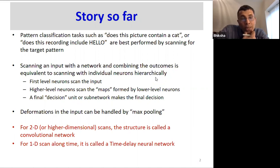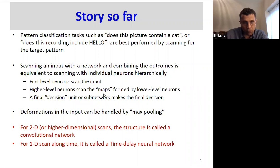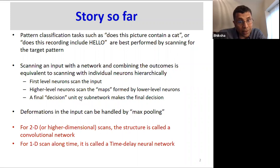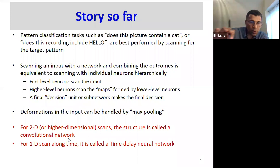Here's the story so far. Pattern classification tasks — such as 'does this picture contain a cat?' or 'does this recording contain the word hello?' — are best performed by scanning for the target pattern. Scanning an input with a network and combining outcomes is equivalent to scanning with individual neurons hierarchically: first-level neurons scan the input, higher-level neurons scan maps formed by lower-level neurons, then a final decision unit makes the final decision. The structure is called a convolutional neural network; if scanning only in one direction, that is a time delay neural network.